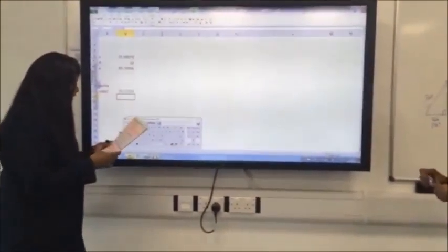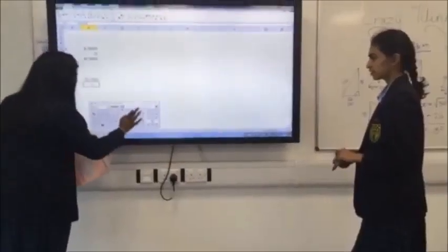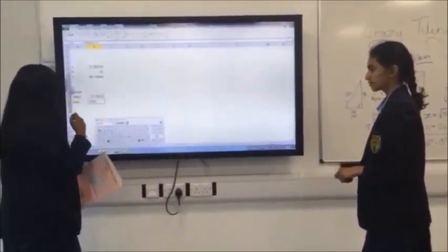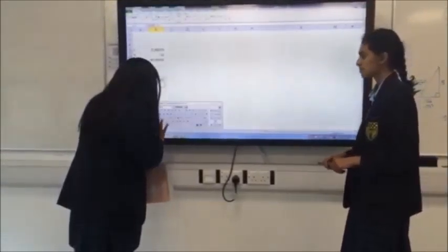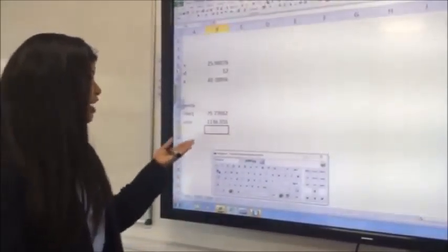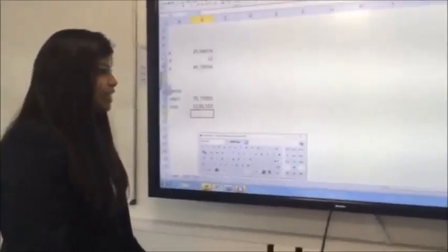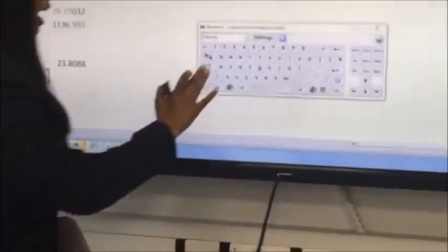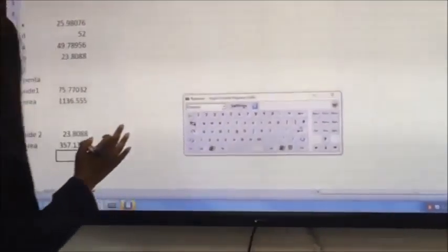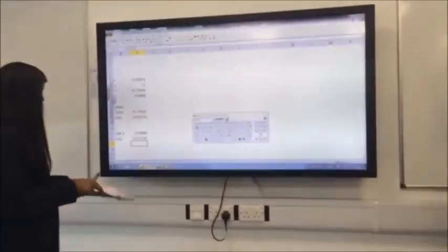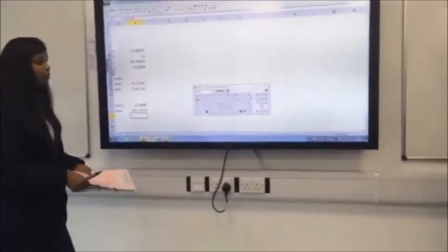75.77032. Now, we need to find the area, equals 75.77, blah, blah, blah, times 15. Now, that's giving us an area of 1136. Side 2 is literally B8. Now, the area is that times the height, times by 15, which should come to 357.131.